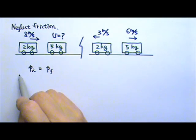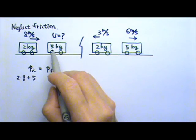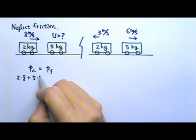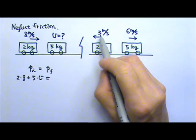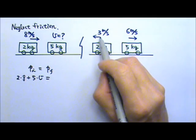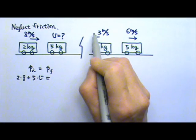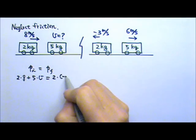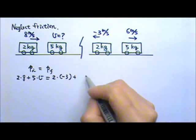Initially, the 2kg cart has a momentum m times v, which is 2 times 8. The 5kg cart has a momentum of 5 times this unknown velocity v. After the collision, the 2kg cart has a velocity of negative 3 meters per second, so its momentum is 2 times negative 3.